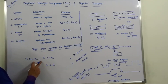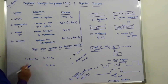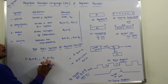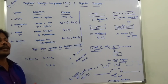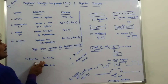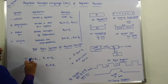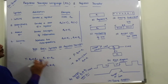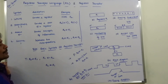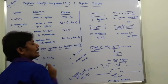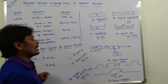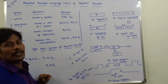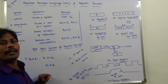There are two micro operations separated by a comma. The content of R1 is transferred to R2, and the content of R2 is transferred to R1. These two micro operations exchange information between registers and can be done within a single clock pulse. When control function P equals 1, the content of register R1 is transferred to register R2.